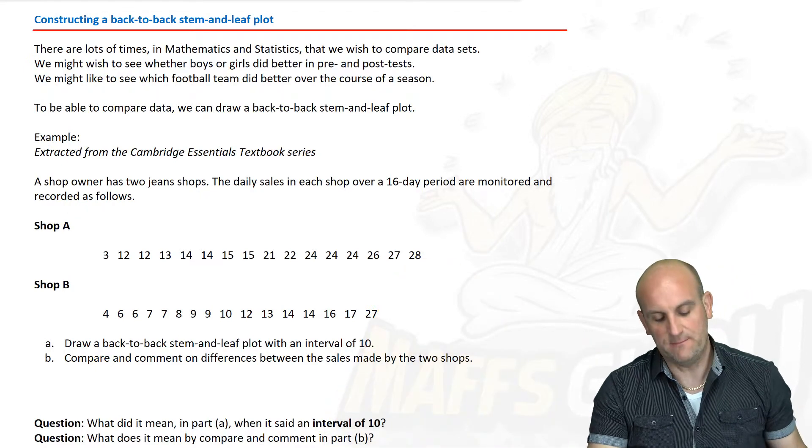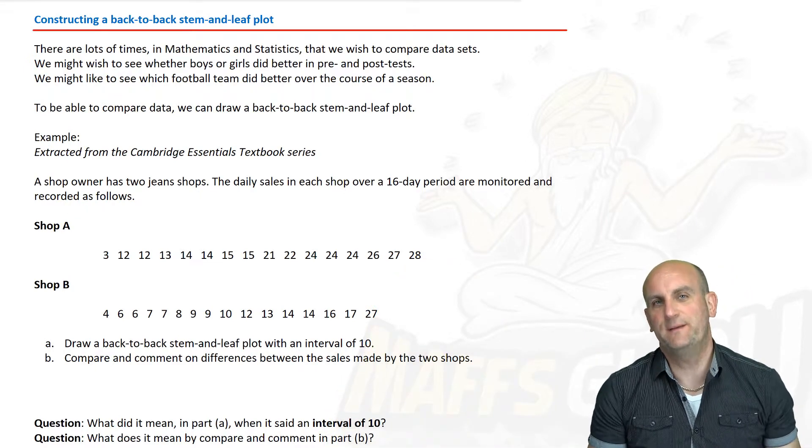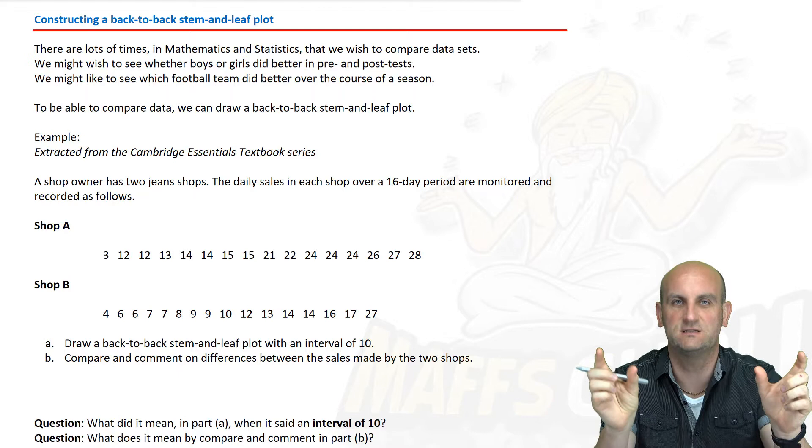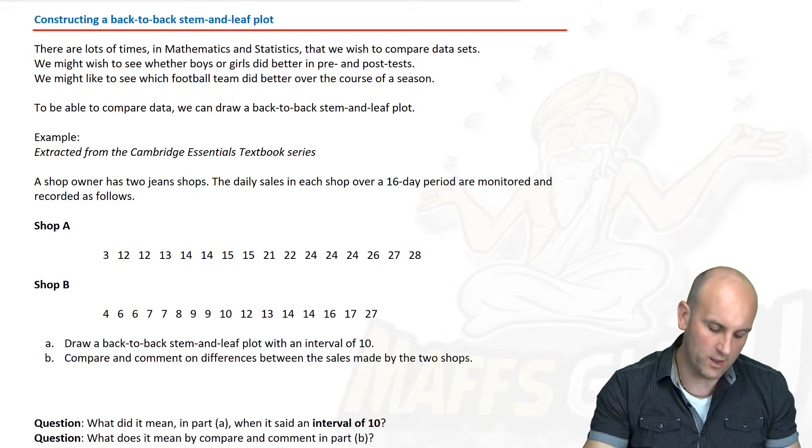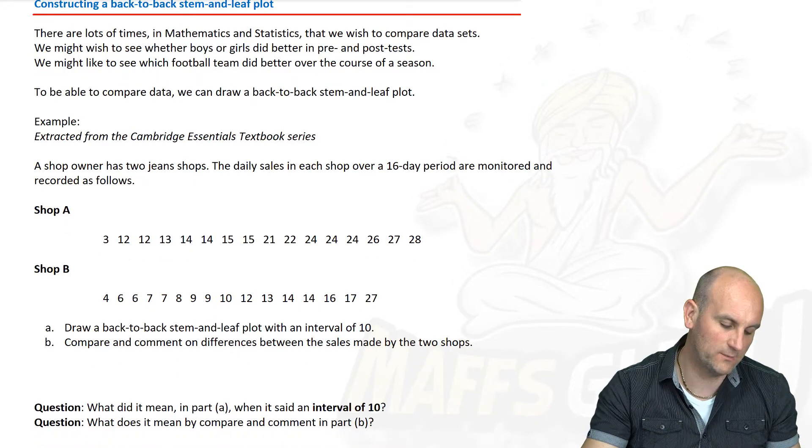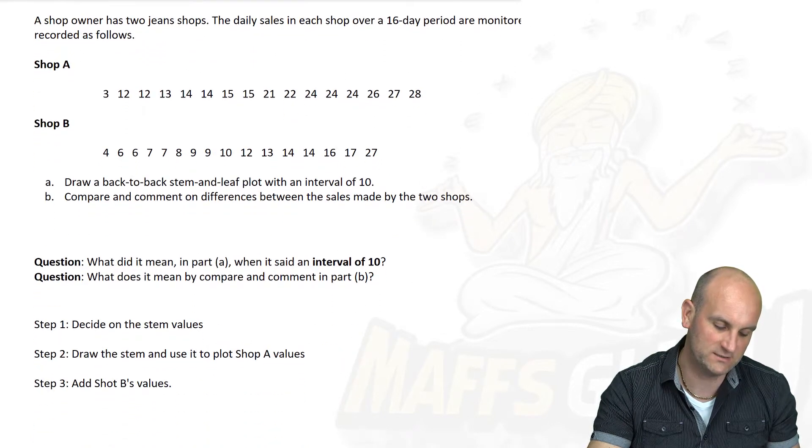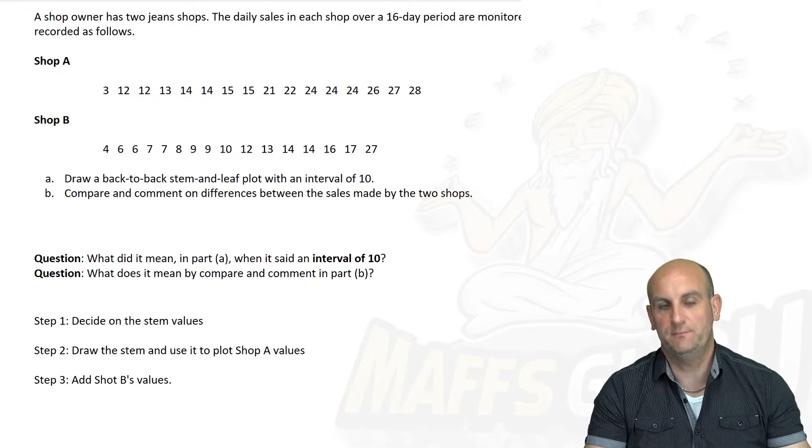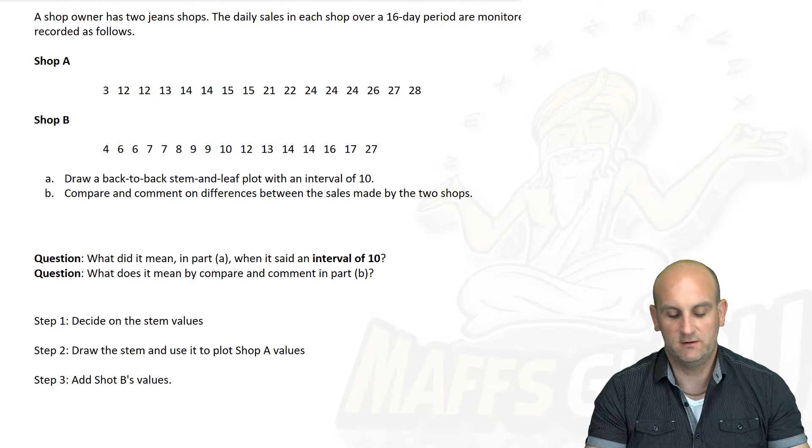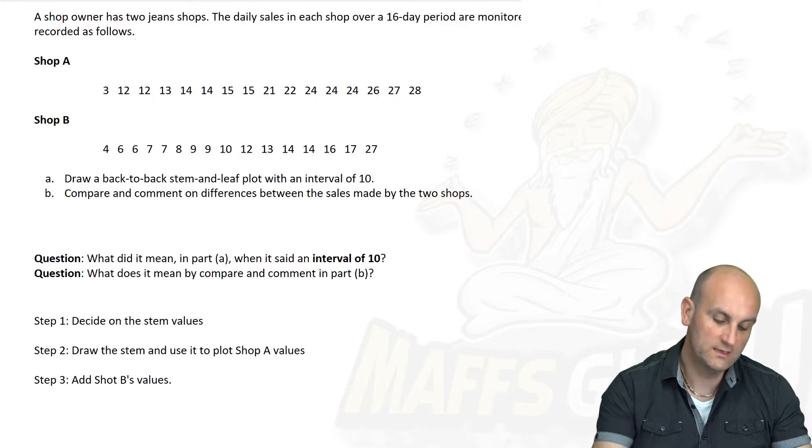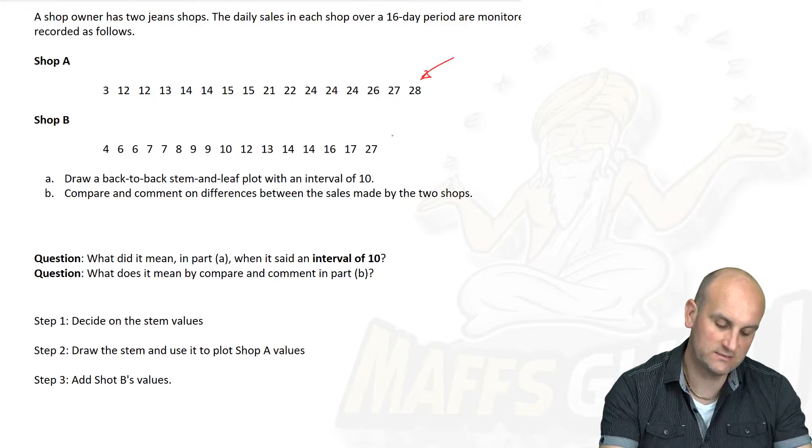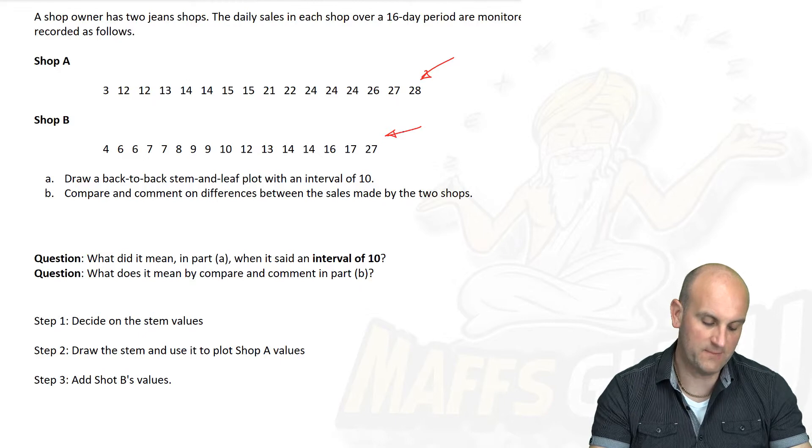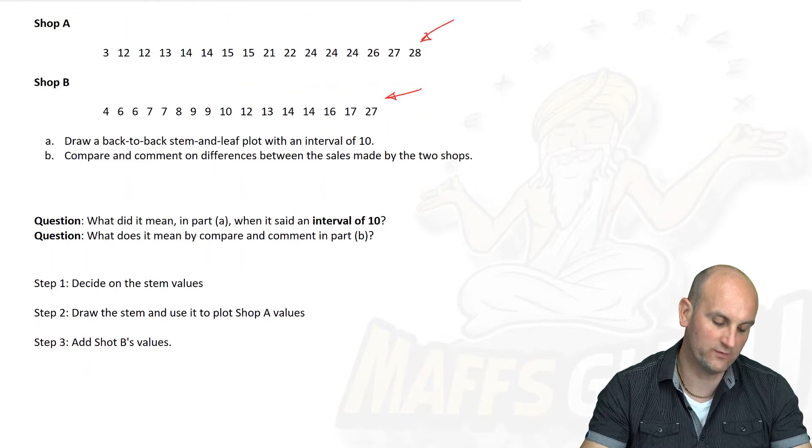We now move on to the idea of constructing a back-to-back stem and leaf plot. Back-to-back stem and leaf plots are fabulous because it allows us to compare two sets of data on just one stem and leaf plot. How on earth do we do this? Well, it just so happens that Cambridge are allowing me to use the question again. A shop owner has two jeans shops. The daily sales in each shop over a 16-day period are monitored and recorded.